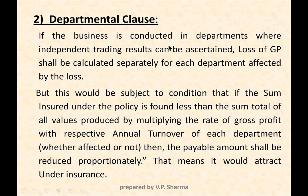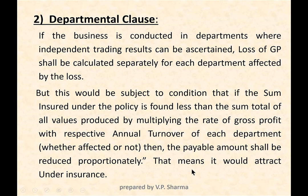The departmental clause says: if the business is conducted in departments where the independent trading results can be ascertained, then loss of gross profit can be calculated separately for each department affected by loss. However, if the sum insured is found less than the sum total of all values produced by multiplying the rate of gross profit with the respective turnover of each department — whether affected or not — then the payable amount shall be reduced proportionately, attracting under-insurance.